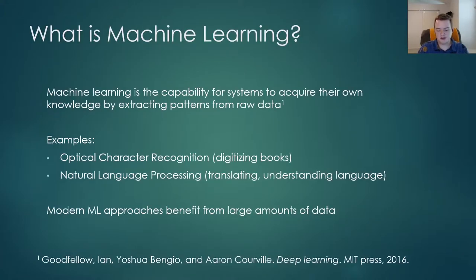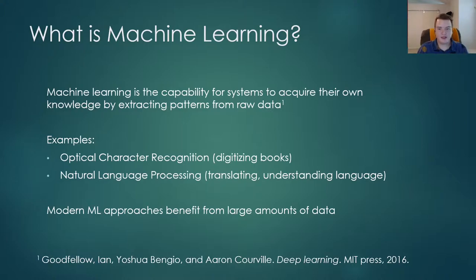What is machine learning? I'm covering this because this is geared towards people who are familiar with Unity but not familiar with machine learning. Machine learning is broadly the capability for systems to acquire their own knowledge by extracting patterns from raw data. Common examples include optical character recognition like digitizing books, or natural language processing such as translating or understanding language. When you ask your digital assistant to add something to a calendar, machine learning is the key ingredient to understanding what you're saying.